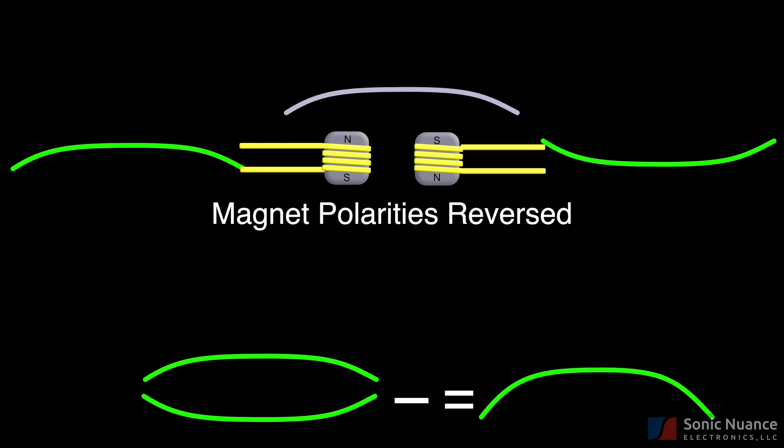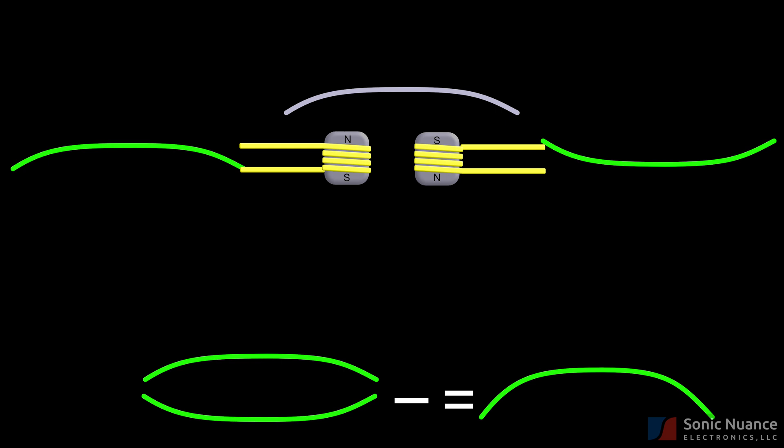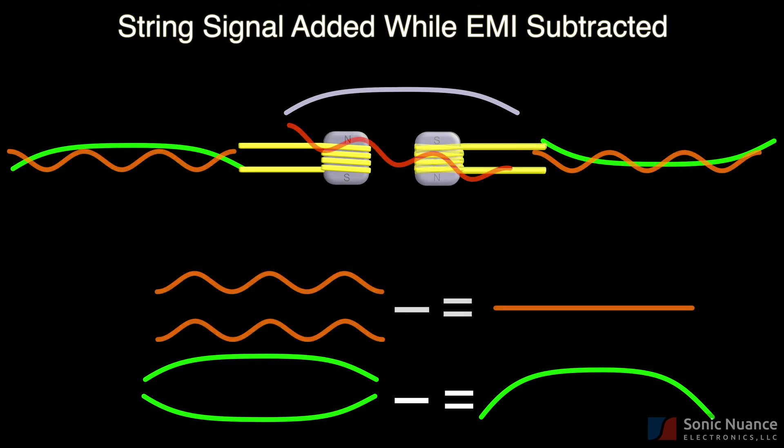Subtracting an inverted signal from the original, subtracting a negative, ends up adding the signals together. When combined, the string signal is added in phase while the EMI signals are subtracted.